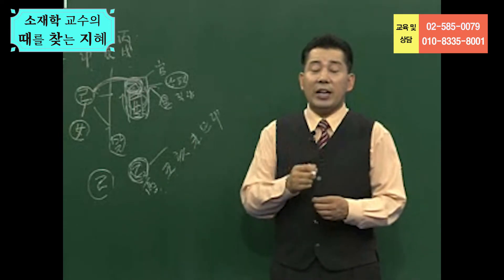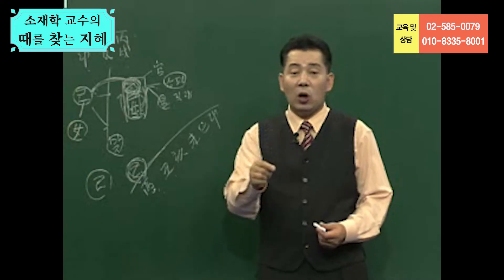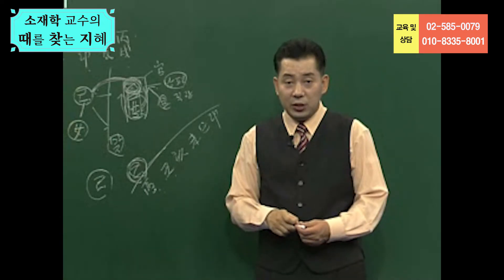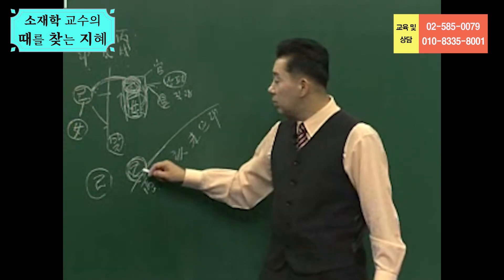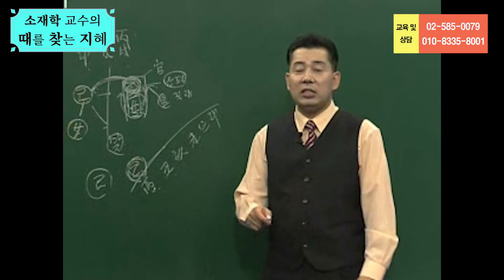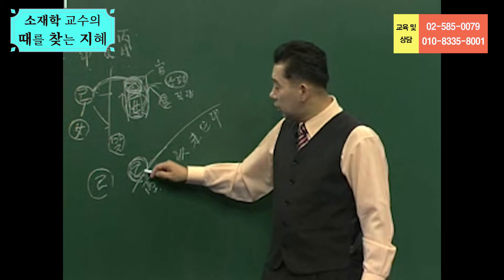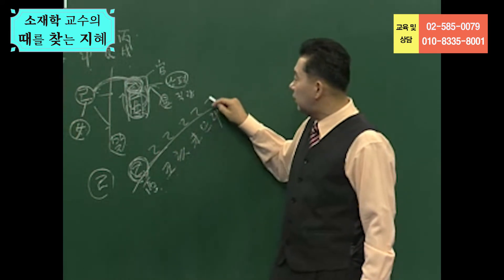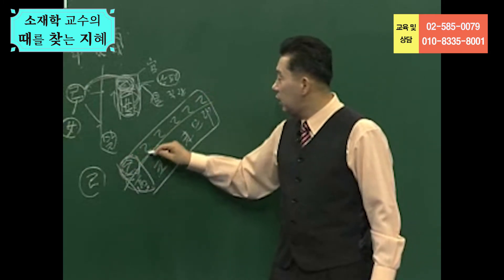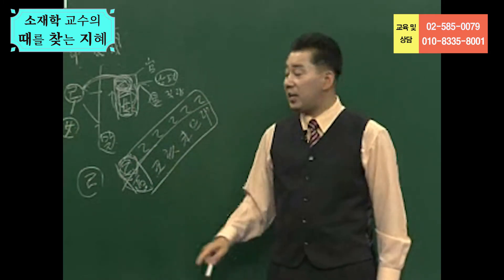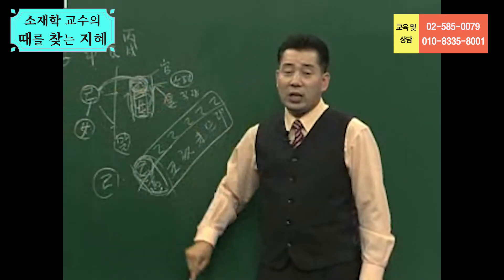그냥 순서입니다. 천간의 을목인 음간, 즉 음간이 을, 정, 기, 신, 계가 음간이죠. 을유 이렇게 올 수는 있어도 을신 이렇게 올 수는 없듯이 음간이 결합할 수 있는 지지, 열두 지지 중에서 순차 음양이 되겠죠. 그것은 즉 을유, 을축, 을해, 을미, 을사, 을묘 이렇게 올 수 있는 것 중에서, 이 중에서 을유가 어떤 위치를 차지하는가를 따져야 되고, 그 다음 을목이 이 사주에서 어떤 역할을 하는가를 따져야 됩니다.